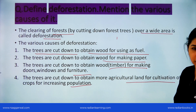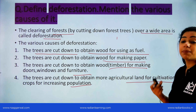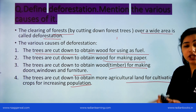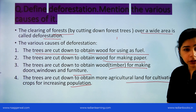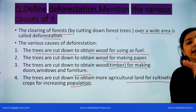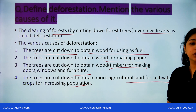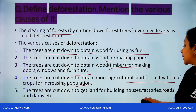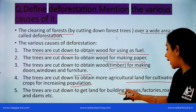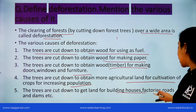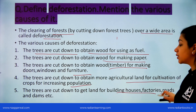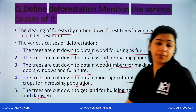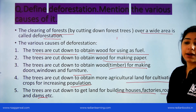Because you have to feed a large population, we cut forests to get land for growing the crops we need. Trees are also cut down to get land for building houses, factories, roads, and dams.